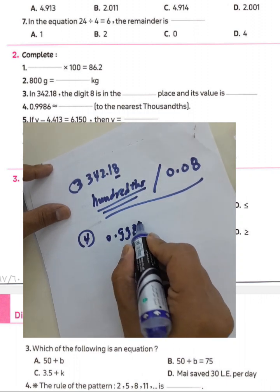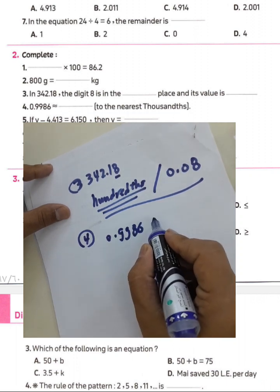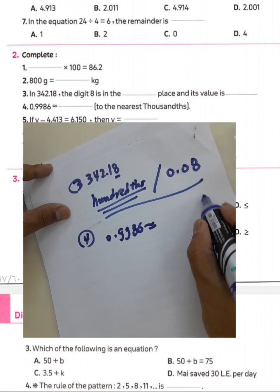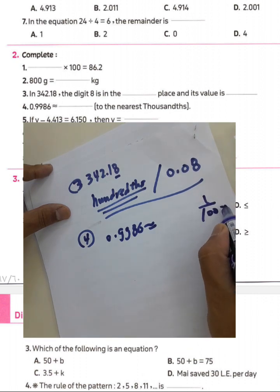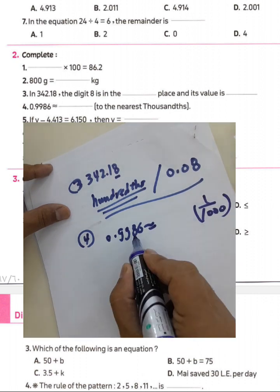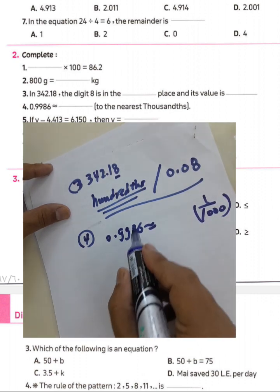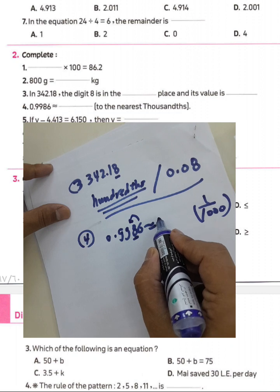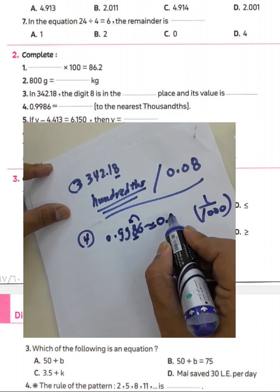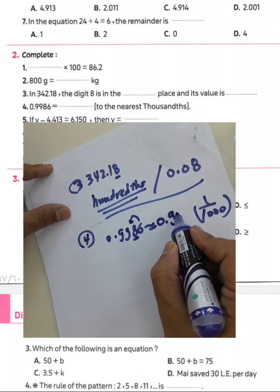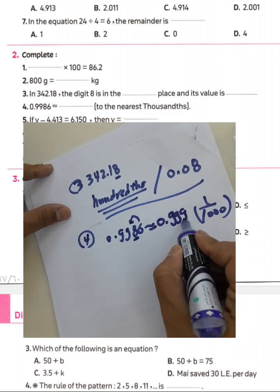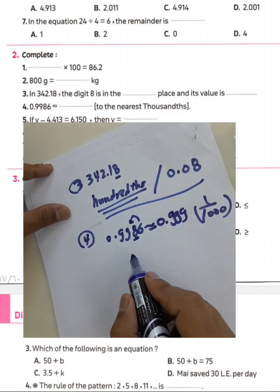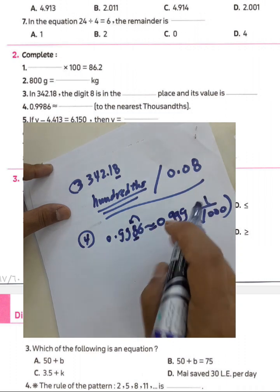Question number four: approximate 0.9986 to the nearest thousandth. Look at the digit in the ten-thousandths place — it is 6, which is 5 or more, so we round up: 0.9986 rounds to 0.999.